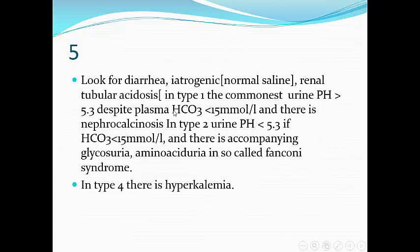In renal tubular acidosis, Type 1 has urine pH always above 5.3, with failure of acidification of urine even if bicarbonate drops below 15 mmol/L, and is associated with nephrocalcinosis. In Type 2, urine pH can drop below 5.3 if bicarbonate is below 15 mmol/L, and it is accompanied by glucosuria and aminoaciduria — so-called Fanconi syndrome. Types 1 and 2 have accompanying hypokalemia, while Type 4 is associated with hyporenin and hyperkalemia.